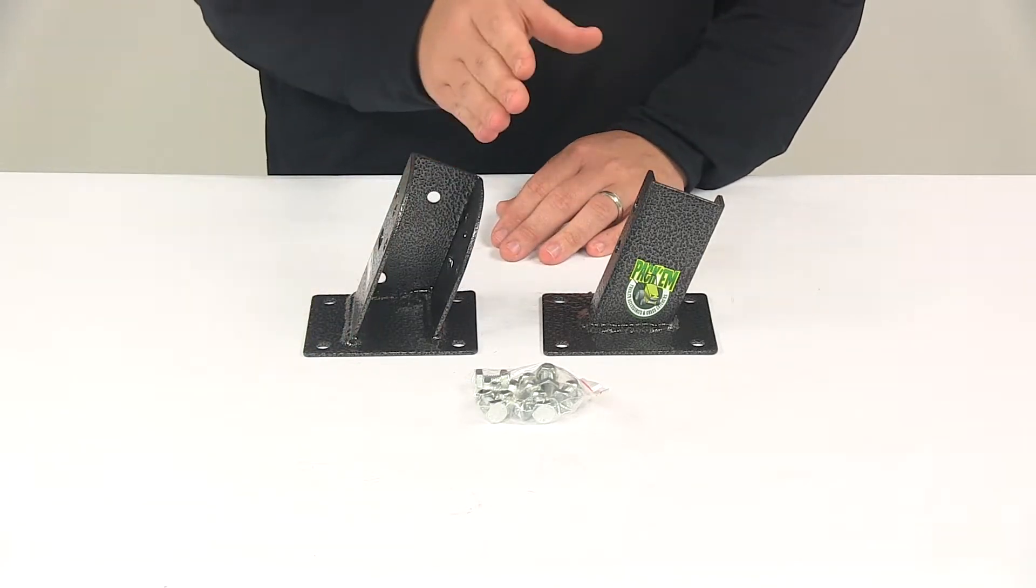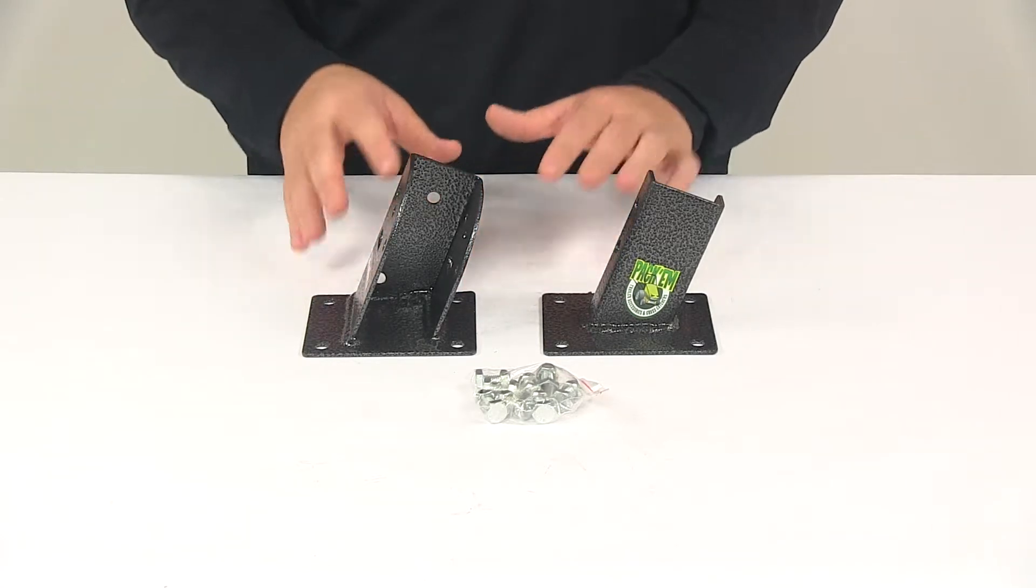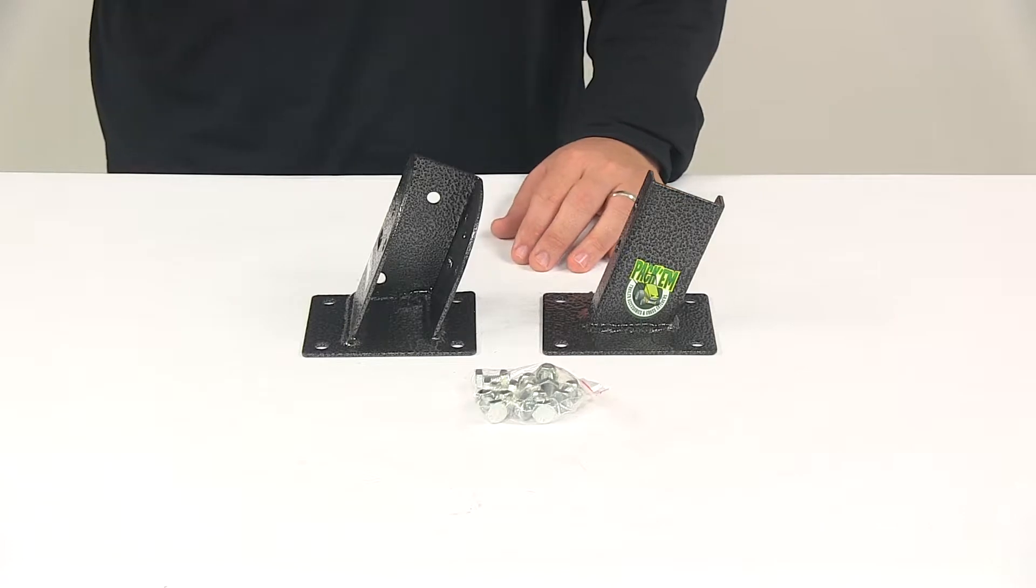Now the arms to actually hold the trimmer are sold separately. We also offer them as a kit with this product. You can find those at eTrailer.com.